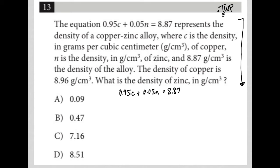Okay, so that's important. I don't want to have to go back and read that. C equals density in grams per cubic centimeter of copper.